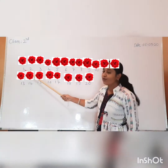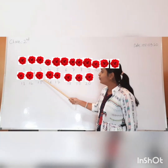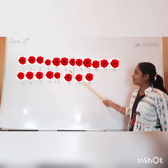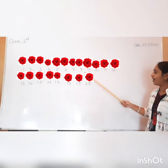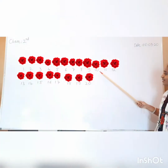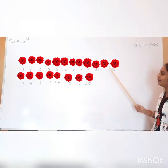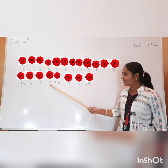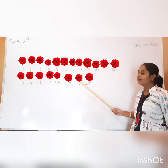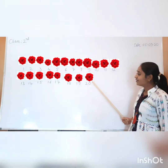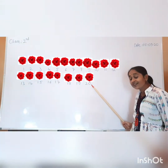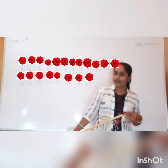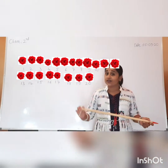How many roses are there? 1, 2, 3, 4, 5, 6, 7, 8, 9, 10, 11, 12, 13, 14, 15, 16, 17, 18, 19, and 20. Total, how many roses are there? Total, we have 20 roses.